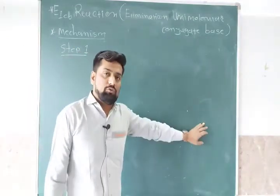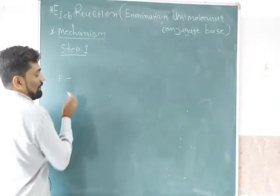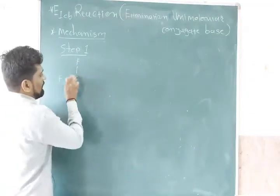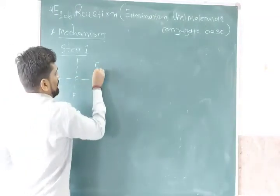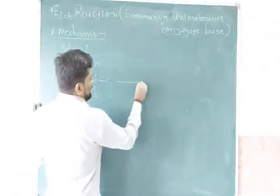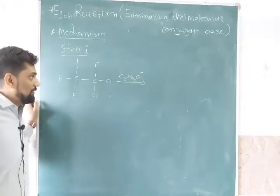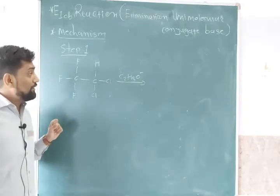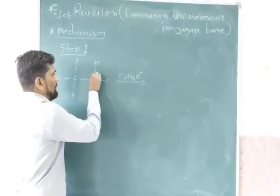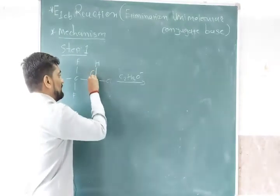This mechanism is complete in two steps. Step one is the formation of the conjugate base, and the second step is the conjugate base converting into the alkene. So in step one, alkyl halide converts into the conjugate base, meaning the carbanion is formed.